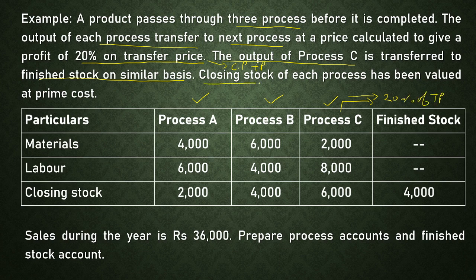The closing stock of each process has been valued at prime cost. Prime cost means those costs or expenses that are directly associated with the production — that is, direct material, direct wages, and direct expenses.